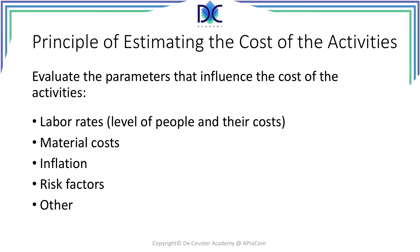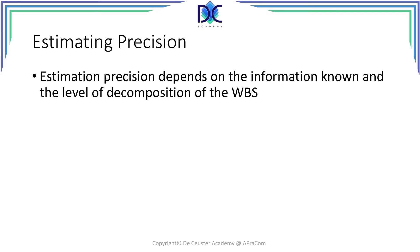We also have to include material costs — what materials do we need to do the project or the activities. We may take into account inflation parameters, such as inflation on wages over the years, and some risk factors. There may be other parameters as well, but the two top ones — labor rates and material costs — are the most common parameters we use when estimating the cost of activities.